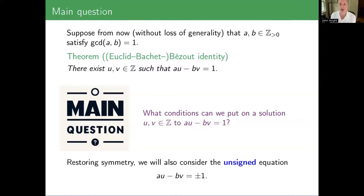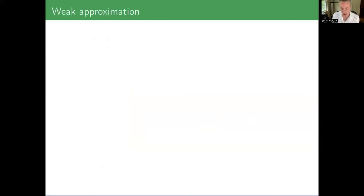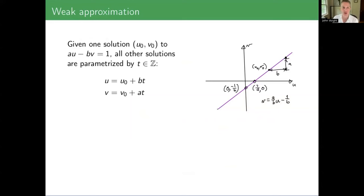Maybe before we dive deeper into this main question — I kind of broke symmetry a little bit when I wrote A times U minus B times V equals one. You might wonder why I put the sign there. If you swap A and B, then you're swapping the sign. So to restore that symmetry, we may also want to consider what I'll call the unsigned equation, where AU minus BV equals plus or minus one.